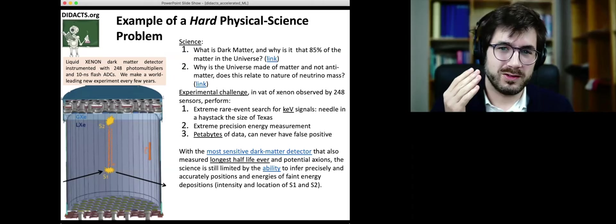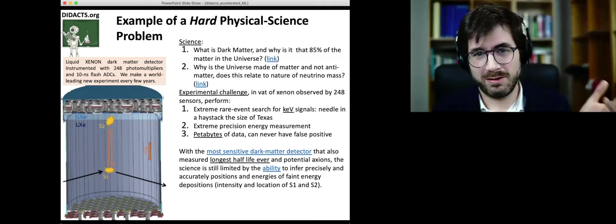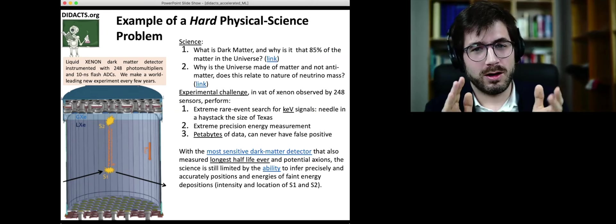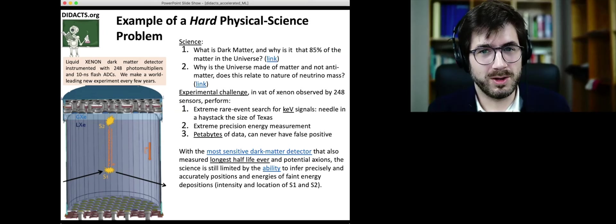With this detector, xenon-wonton, which is the most sensitive direct detection experiment ever built, we measure half-lives longer than the age of the universe. We might have found axions, and I can say that without laughing too much. But our ability to infer position and energies of events occurring in this is still one of the key things limiting our science.